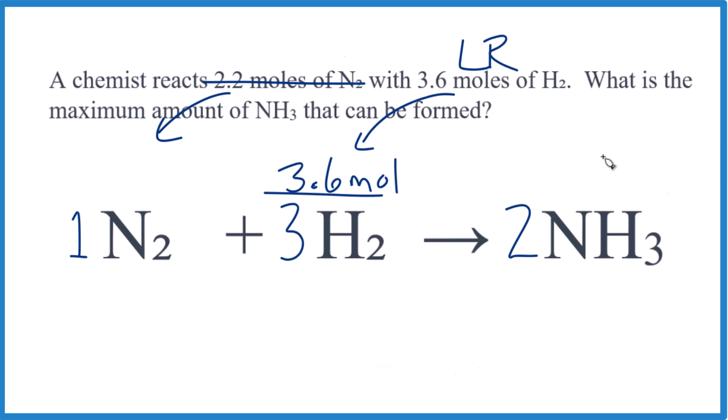So if I want to know how much NH3 is produced, I could say 3.6 is to 3 as X is to 2. Do the cross multiplication here. 3 times X is 3X. 3.6 times 2 equals 7.2 moles.